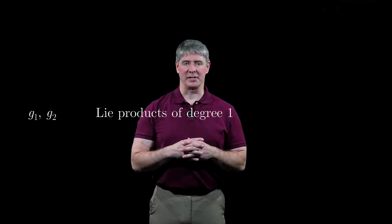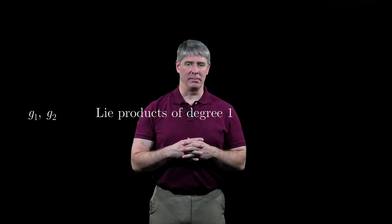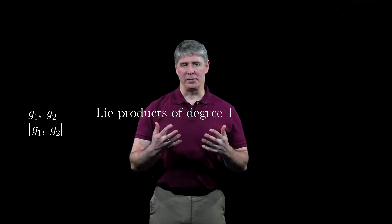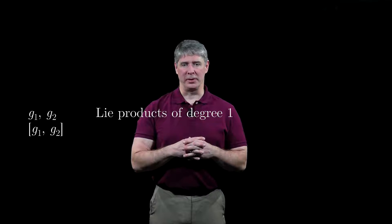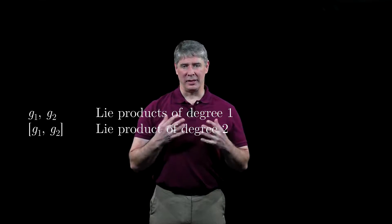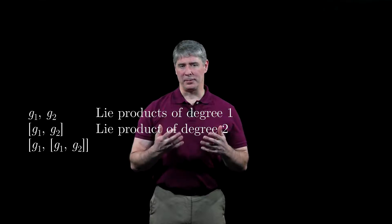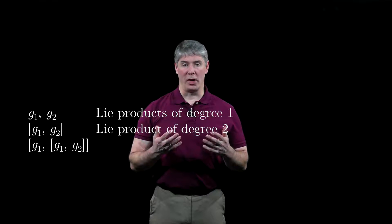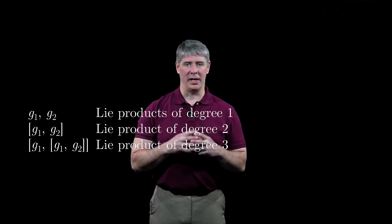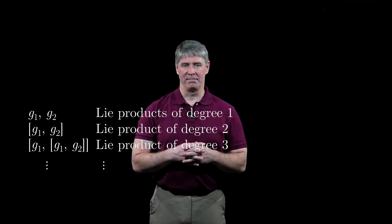We call the original vector fields Lie products of degree 1, the Lie bracket of two of the original vector fields a Lie product of degree 2, the Lie bracket of Lie products of degree 1 and 2 a Lie product of degree 3, and so on.